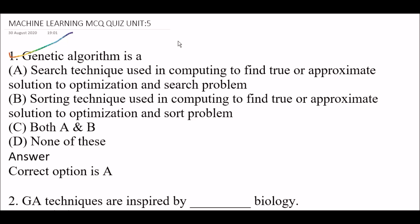Option A: Search technique used in computing to find true or approximate solution to optimization and search problem. Option B: Sorting techniques used in computing to find true or approximate solution to optimization and search problem. Option C: Both A and B. Option D: None of these. Right answer is Option A — search techniques used in computing to find true or approximate solution to optimization and search problem.